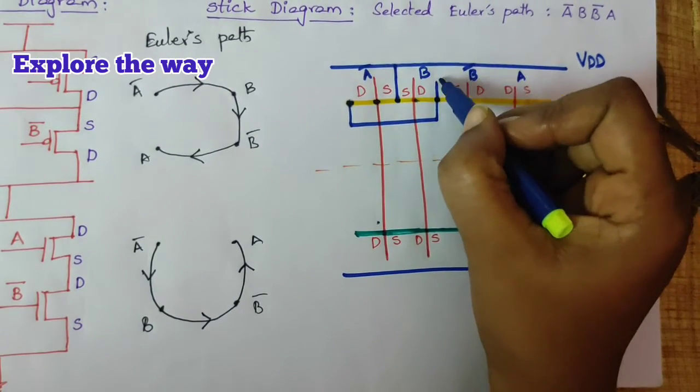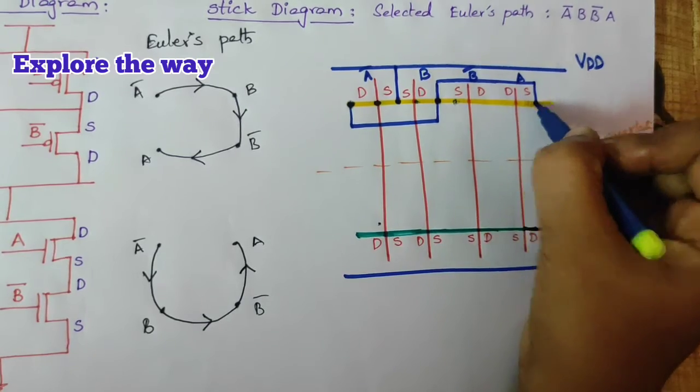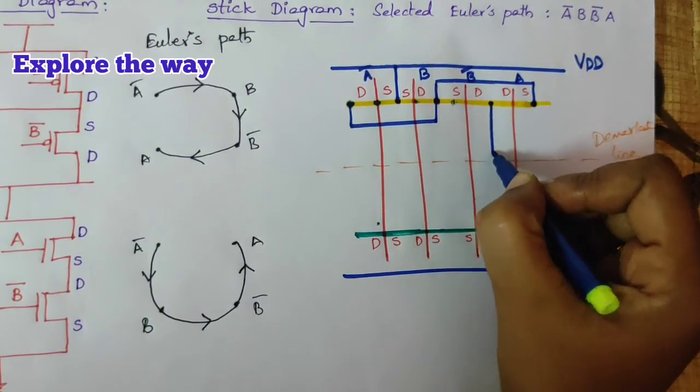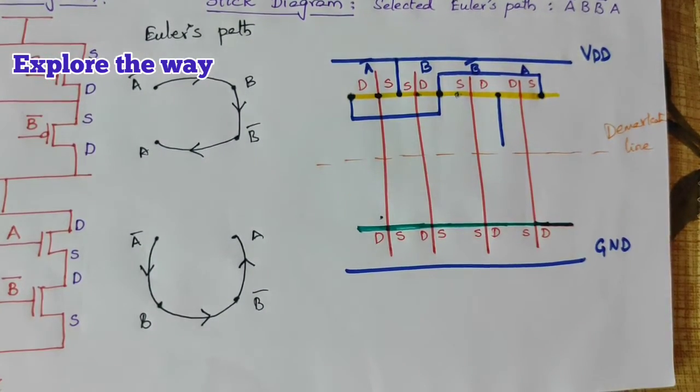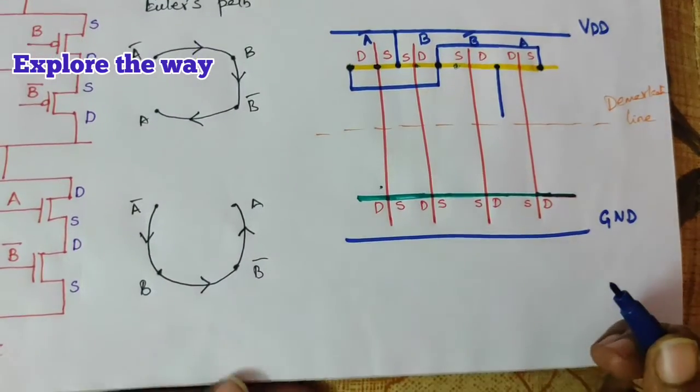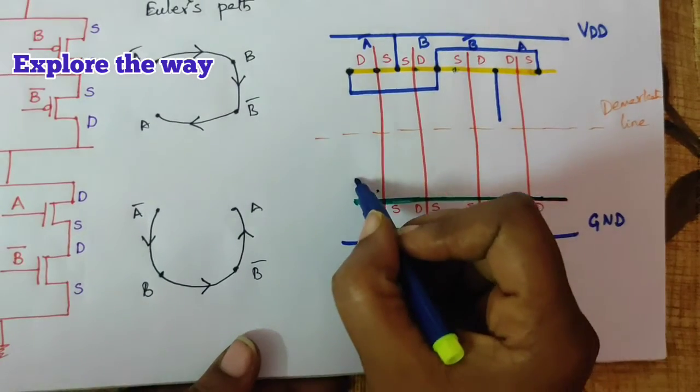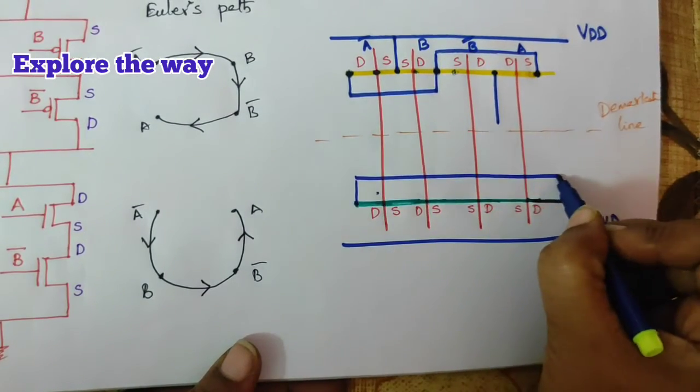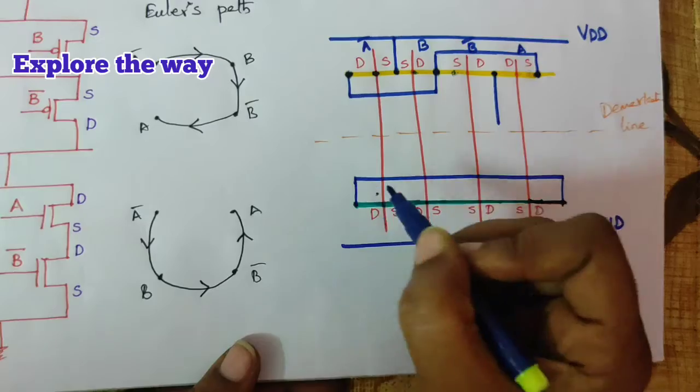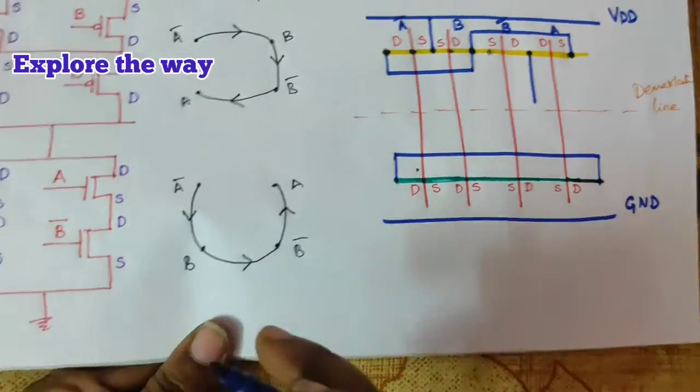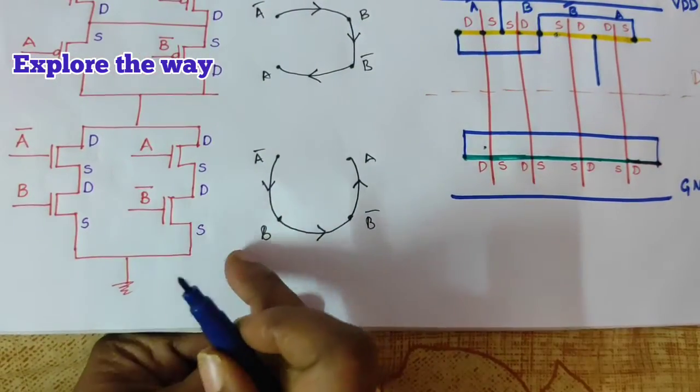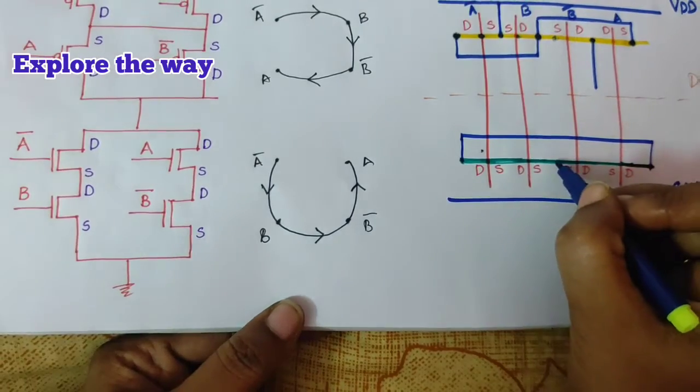The two sources are connected. Similarly, drain. And, coming to pull down network. A bar, A. Drains are connected. A bar, A. Drains are connected. B, b bar. B, b bar. Sources are connected. Connected to ground.